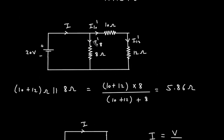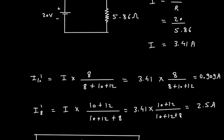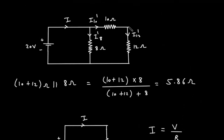I12 prime carries the same current as I10 prime, so I12 prime = 0.909 ampere. The direction of these currents follows the polarity of the battery, since current flows from the positive terminal to the negative terminal, which gives a downward direction.